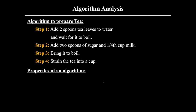Whenever you are writing an algorithm, you have to follow certain properties. The first property is finiteness, which means your algorithm should contain a finite number of steps only — it should not contain infinite steps and it must have some endpoint. Your algorithm may or may not take inputs, but it should produce at least one output, otherwise it is not meaningful. Finally, an algorithm is language independent. For example, you can write an algorithm for addition and implement it using any programming language — C, C++, or any other.